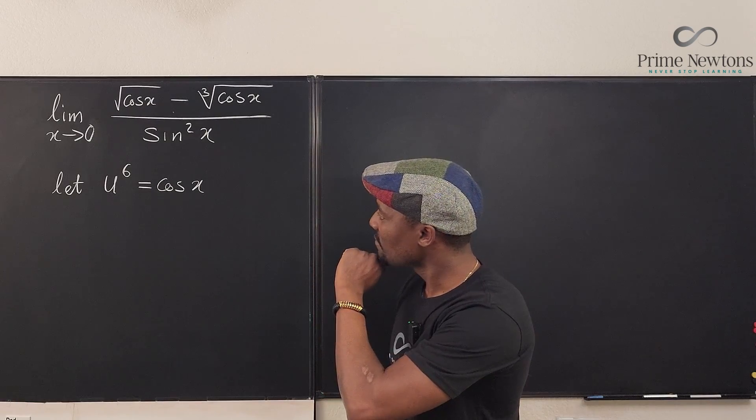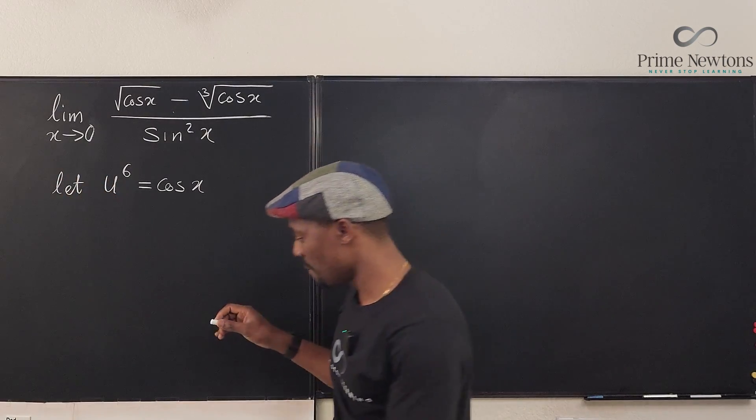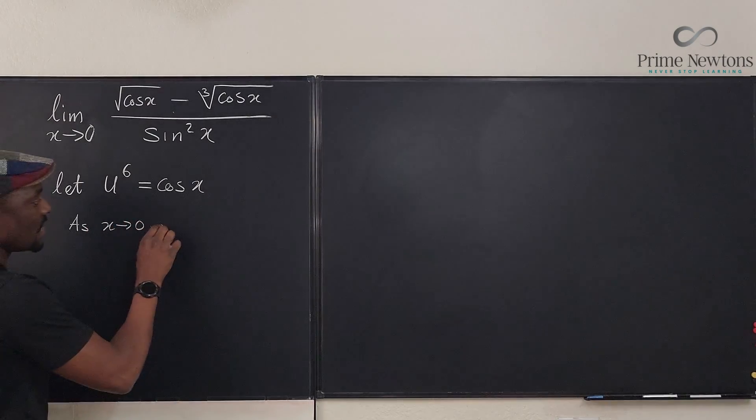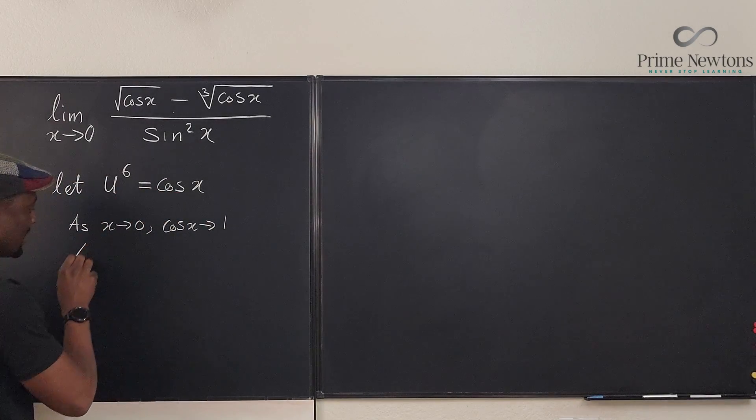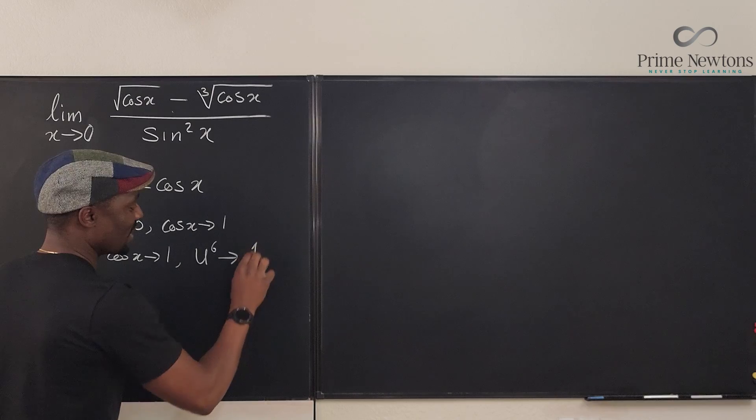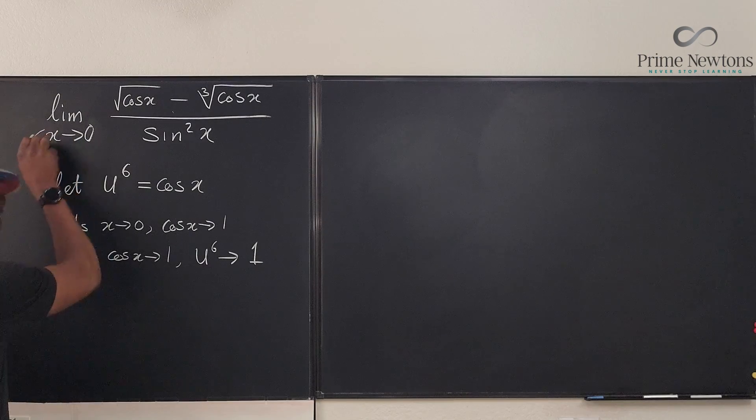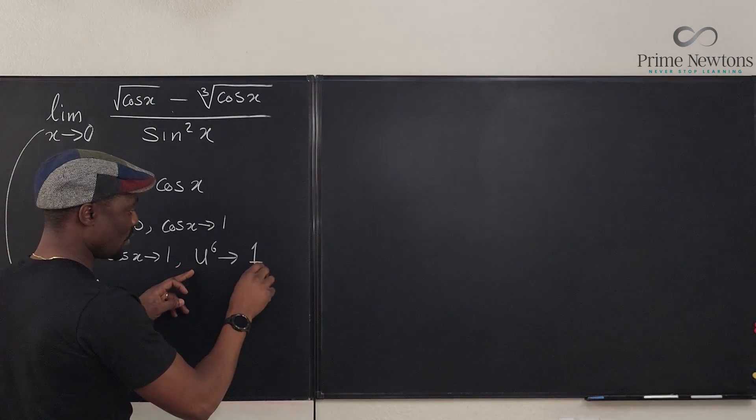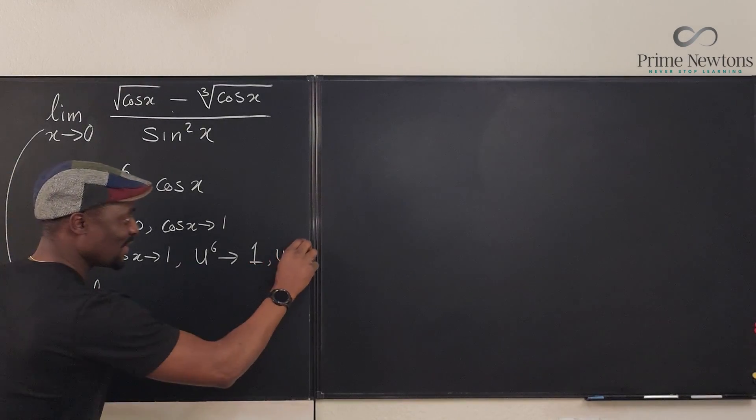So what I'm going to do now is take the limit because I want to change everything to turn to u instead of using x. So I know that as x goes to zero, I know that cosine x will go to one. And what happens to u? Remember as this goes to one, and as cosine x goes to one, u to the sixth also goes to one. So the problem is now the same thing as the limit as u to the sixth goes to one. It means u also goes to one. I need u to go to one. So u to the sixth goes to one.